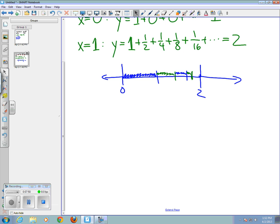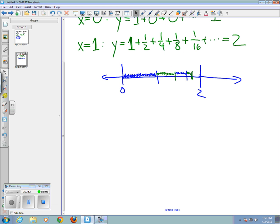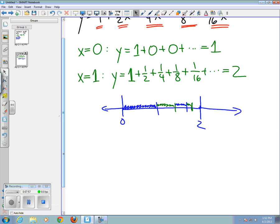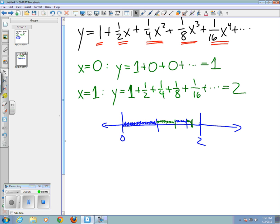Now let's suppose that we were to put in, rather than one, the value two. So let's go back and look at the series that we had to begin with. We have one plus one-half x plus one-fourth x squared and so on. So when x equals two,